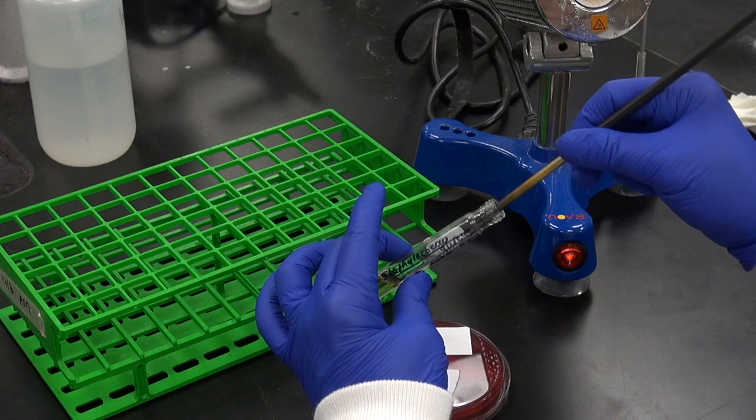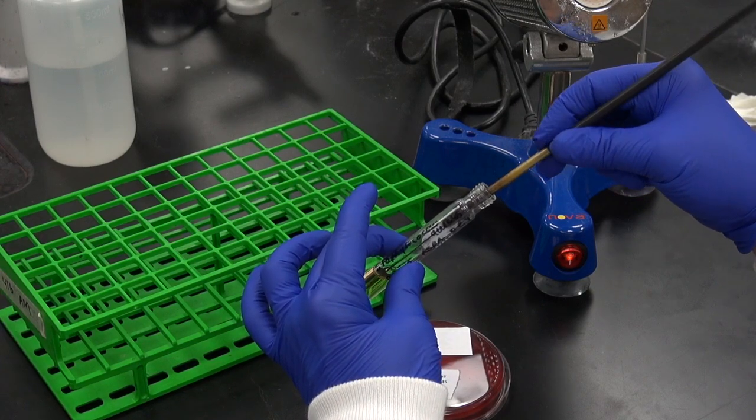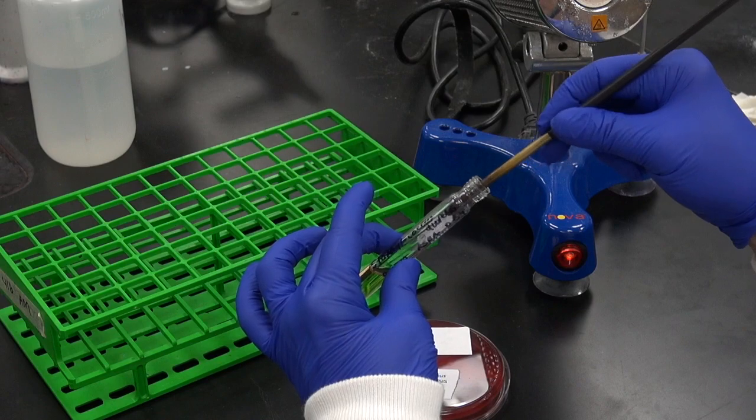Once the loop is submerged in the broth, twist it back and forth between your fingers to release the bacteria into the liquid.